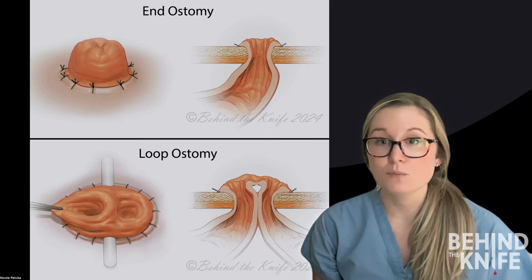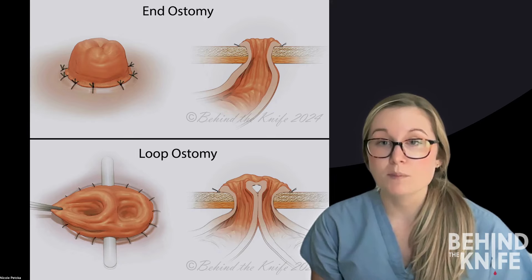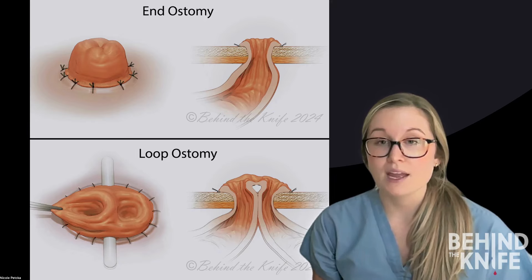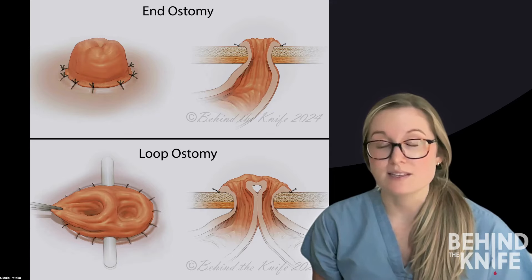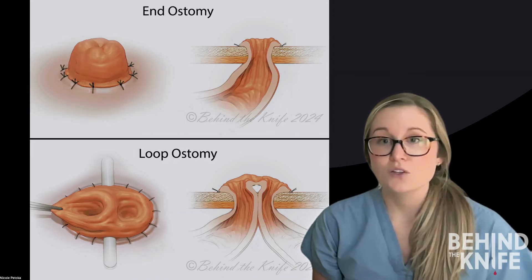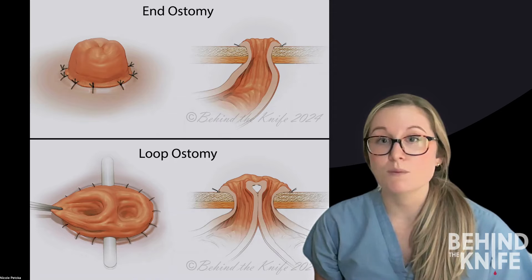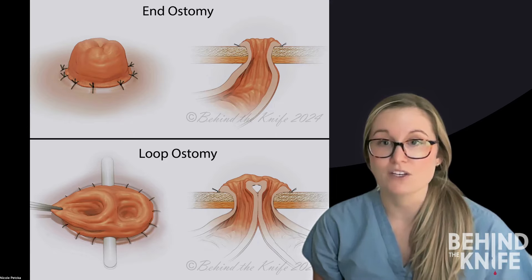This is in contrast to a loop ostomy. A loop ostomy is created by bringing a loop of bowel up through the abdominal wall, then creating an opening in the side wall of the bowel. This allows there to be two lumens in a loop ostomy — one lumen moving proximally and the other moving distally. Loop ostomies are typically used for diverting procedures or when you suspect the ostomy will be temporary, as loop ostomies can be closed in a minor procedure instead of a major abdominal operation.